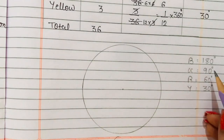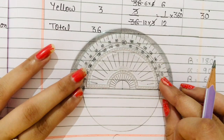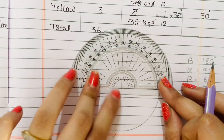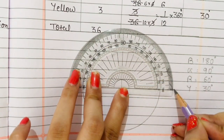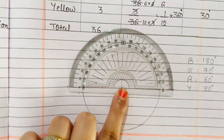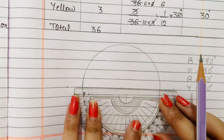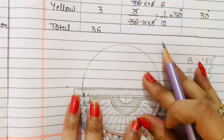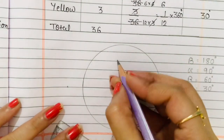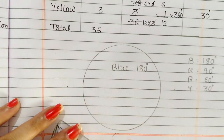We will start with blue, which has 180 degrees. We take a protractor, start from a point, place the middle of the protractor there. This is the 0 and 180 axis, so we mark 180 and draw a straight line. Blue is done — that is 180 degrees. Now second is green, that is 90 degrees.